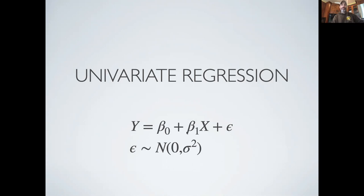So we've now added a beta one x and written down the equation for a straight line. If x is a continuous variable and y is a continuous variable, this is known as a univariate regression model — we're looking at a line between some x and y.